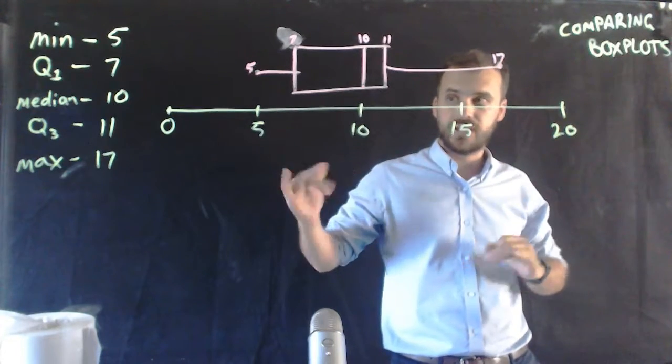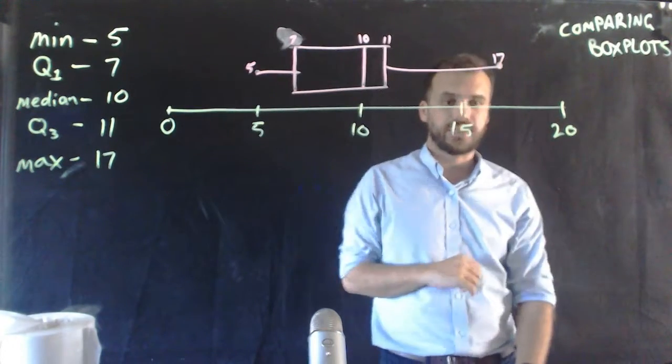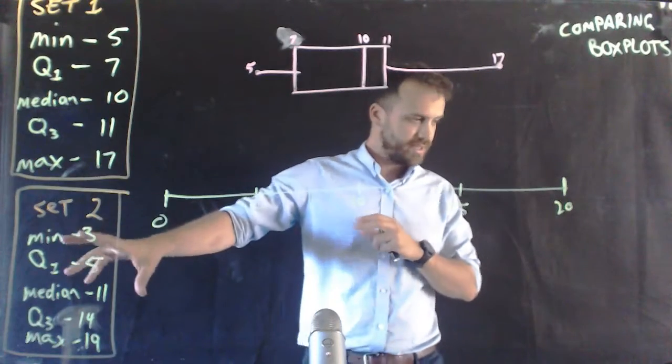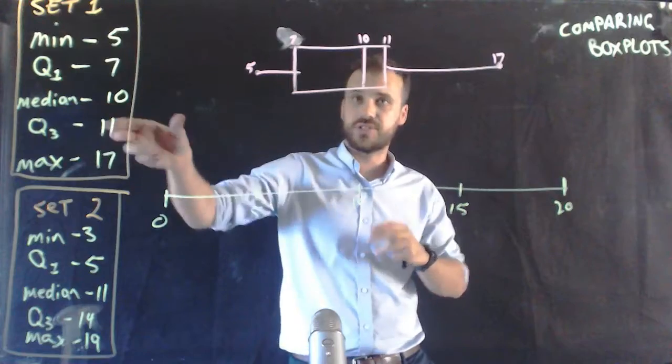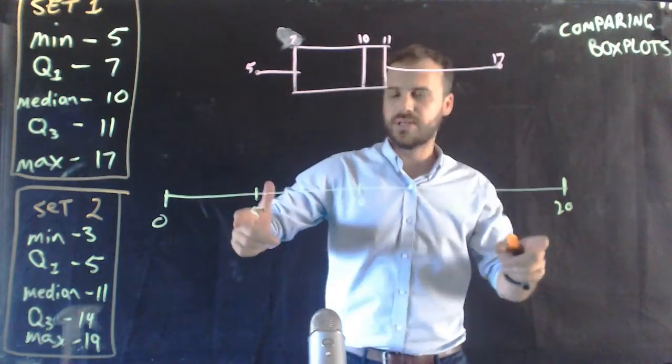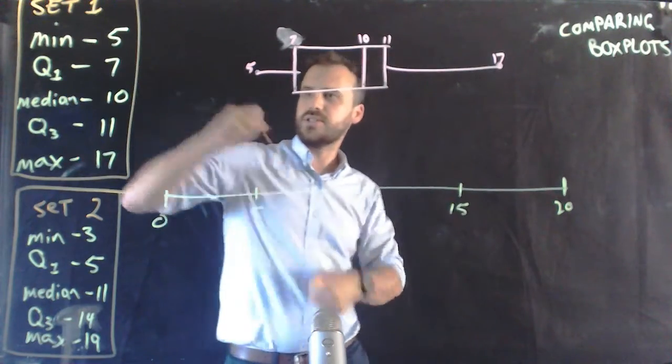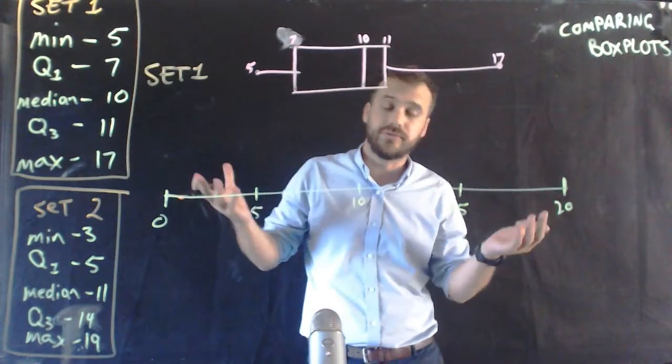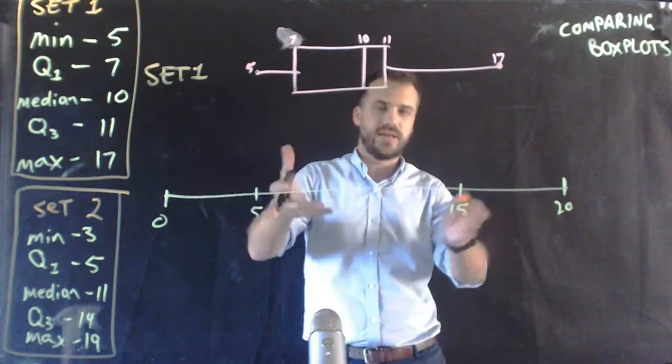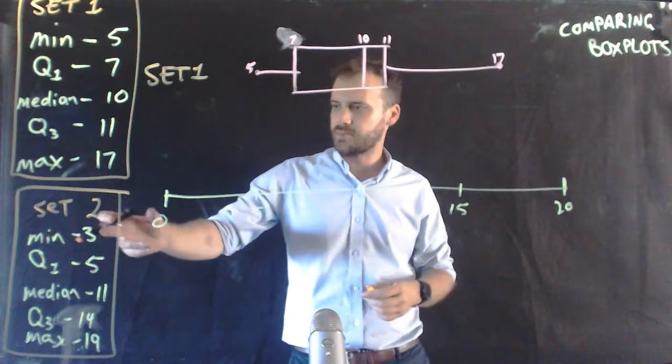So for that we're going to need another data set. I'm also going to drag this down and take a look at it. Okay, so here's my second set, and I'm going to compare that second set to this first set, which I've already done. I've moved my thing down so I can put another set in there. So this is set one, just a class of students that did like a test out of 20.